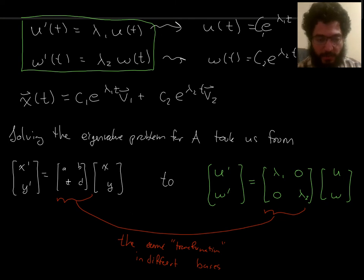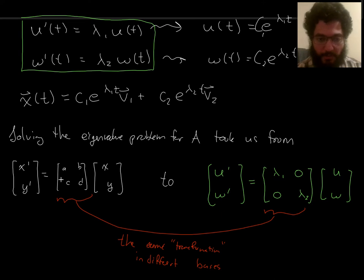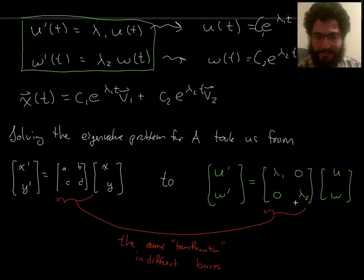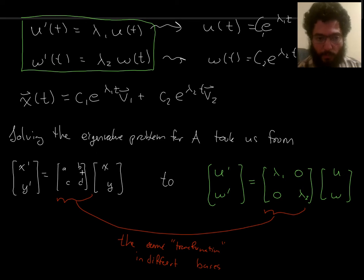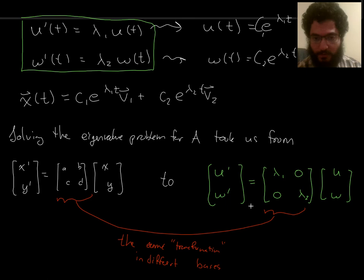In the last video, we saw that by solving the eigenvalue problem for a matrix like ABCD — not necessarily diagonal to begin with — you can come up with a basis called the eigenbasis, which provides you with a diagonal matrix. It's a different matrix, but it represents the same underlying linear transformation. On the differential equation system side, we basically have the same differential equations but with different variables.